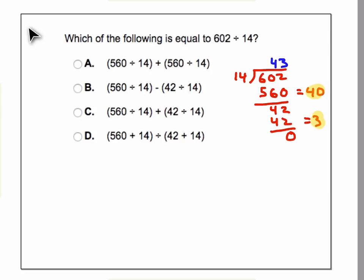So which problem over here on the left, A, B, C, or D, is using 560 divided by 14, and then 42 divided by 14, and then you add those partial quotients together?